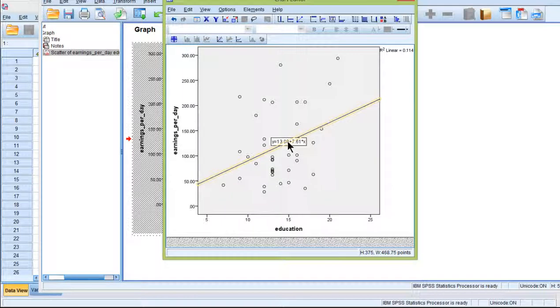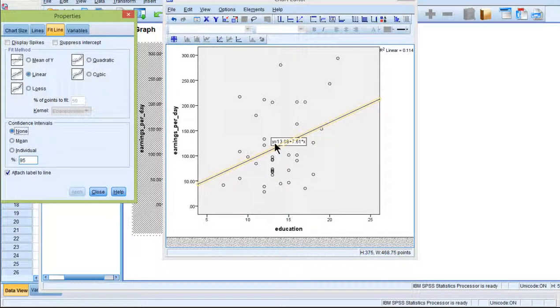Now, I'll point out here briefly is that the process in SPSS automatically inputs the regression equation. So y equals 13.98, which is the intercept, plus 7.61, the unstandardized slope, times x, any value of education. I'm going to get rid of that for a minute, but I'll come back to it later.